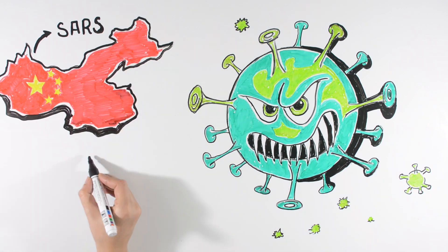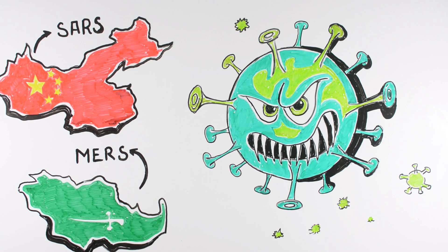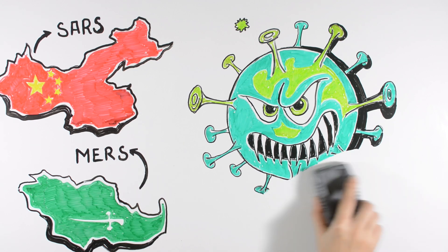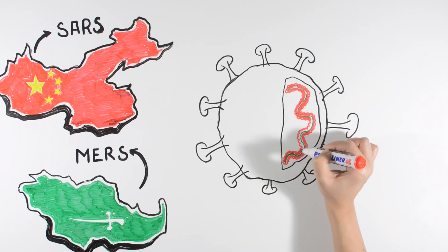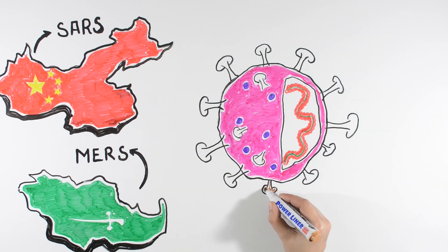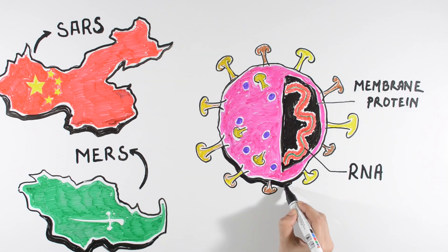But the novel coronavirus is new, which had not been identified in humans previously until now. Coronaviruses consist of a core of genetic material surrounded by an envelope with protein spikes which look like a crown. And in Latin, crown is called corona, and that's how this virus got its name.